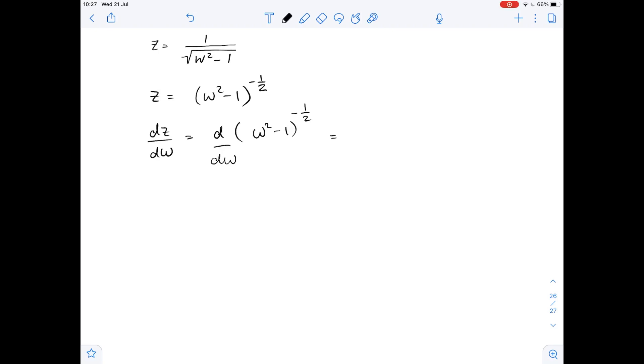Using the chain rule and the power rule, this equals negative 1 over 2 times w squared minus 1 to the power of negative 3 over 2 times the derivative of w squared minus 1 with respect to w.